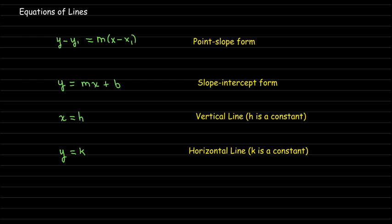So in summary, we've got, for slanting lines, we have a point-slope form and a slope-intercept form. If we have a vertical line, remember that means the slope is undefined. Its equation is going to look like x equals some number. And for a horizontal line, where the slope is 0, you get y equals some number.